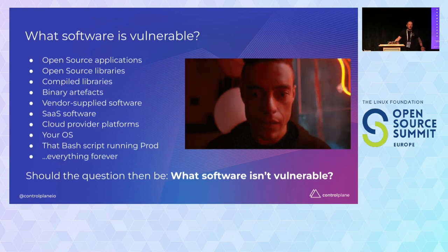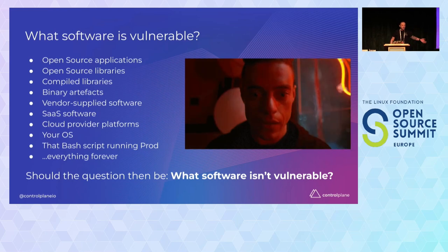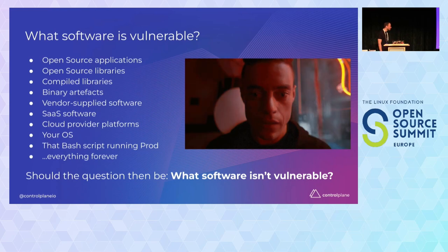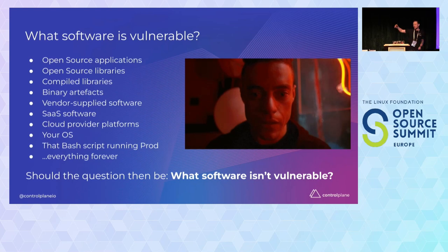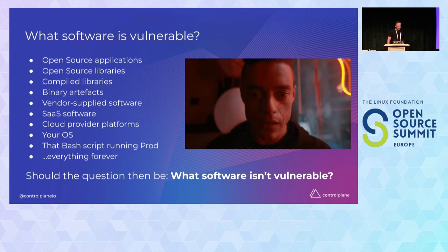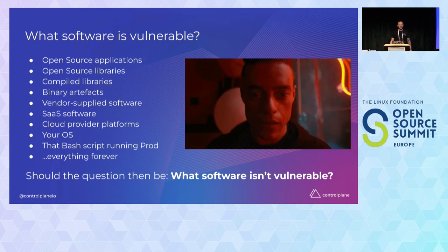What software is not vulnerable? Open source, of course, is vulnerable — anything that accepts third-party or first-party contributions, compiled binary artifacts, things in the cloud whether SaaS or cloud providers themselves, your operating system, bash scripts running in production. Anything and everything. We're deferring trust to machines to run software for us, and humans are fallible — therefore it is an extension of our mortal fallibility.